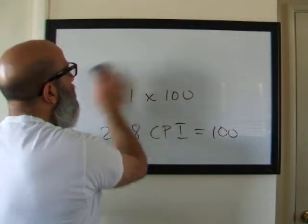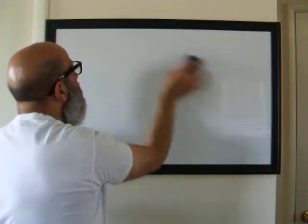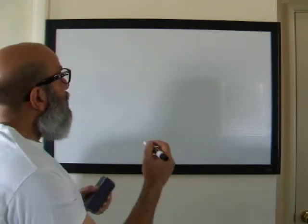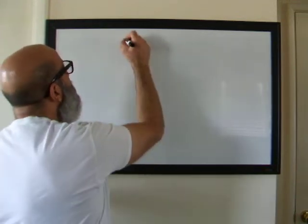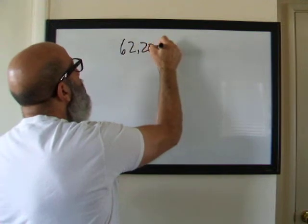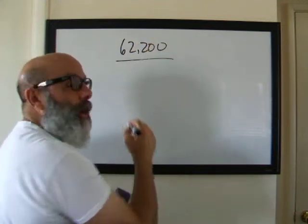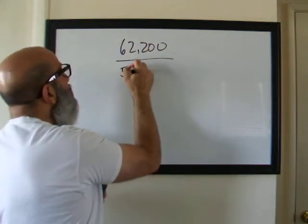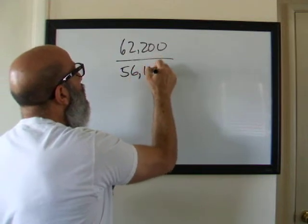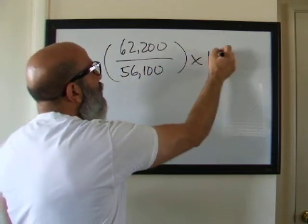So let's use that same idea to find out what CPI is going to be for 2019. For 2019, we had a market basket value of 62,200. Now we're going to divide that by our base year of 56,100 and then we're going to multiply that times 100.